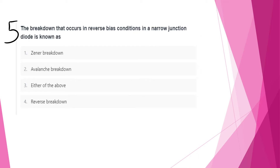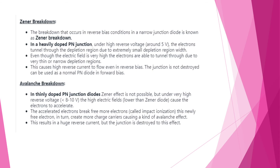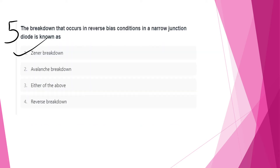The breakdown that occurs in reverse bias condition in a narrow junction diode is known as Zener breakdown. This is option A. Note that the Zener breakdown versus avalanche breakdown distinction is very important.